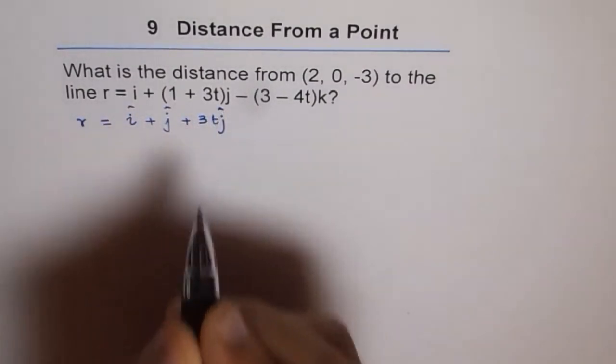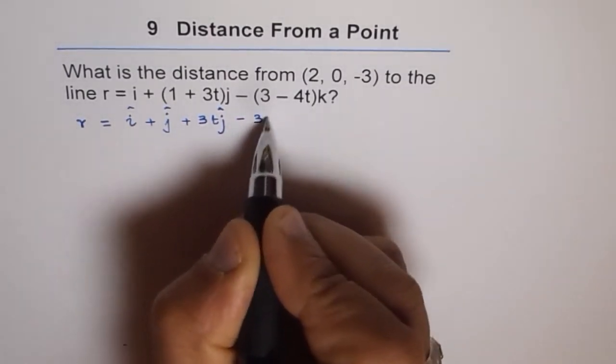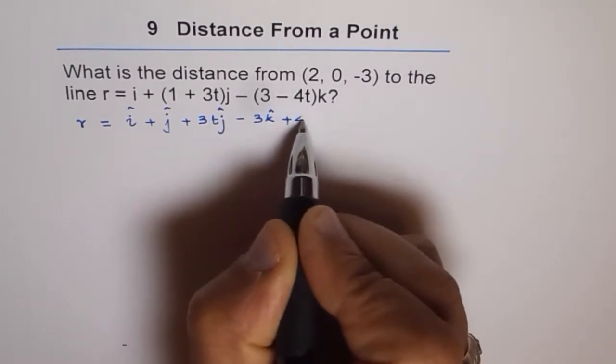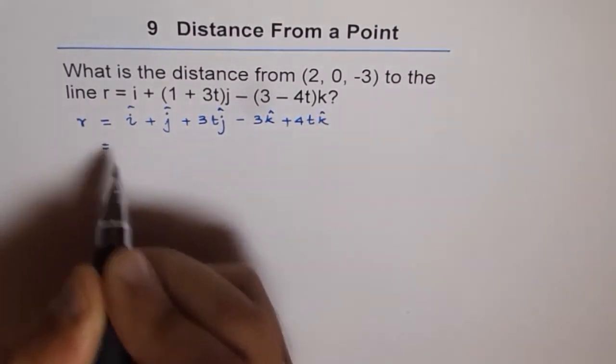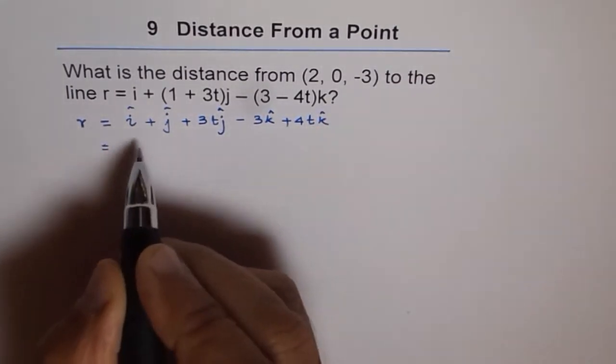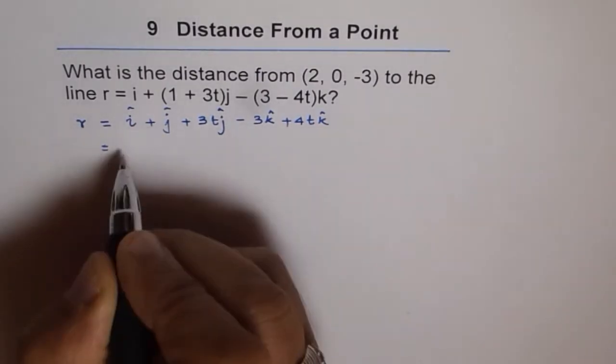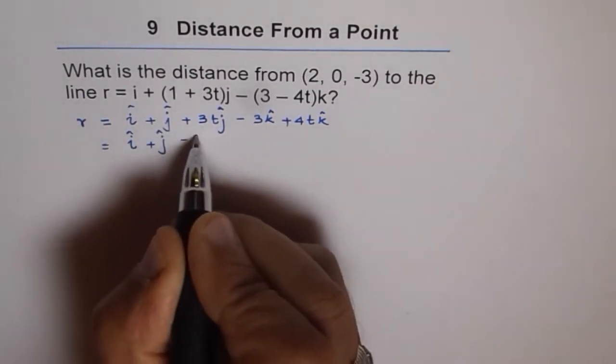So these are unit vectors i, j, k along x, y, z axis. So minus 3k minus, minus makes it plus 4tk, correct? Now here we can combine the point vectors on a line, which is i, j, and minus 3k. So we'll say i + j - 3k.